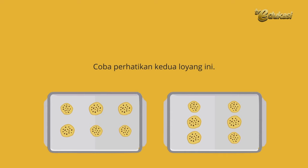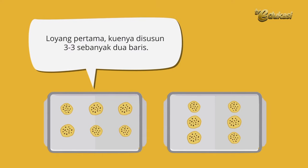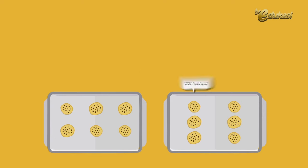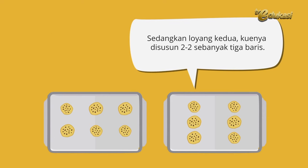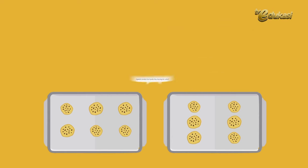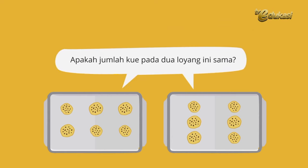Coba perhatikan kedua loyang ini. Loyang pertama, kuenya disusun tiga-tiga sebanyak dua baris. Sedangkan loyang kedua, kuenya disusun dua-dua sebanyak tiga baris. Apakah jumlah kue pada dua loyang ini sama?